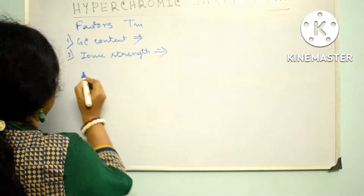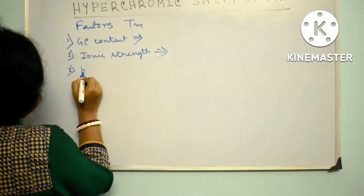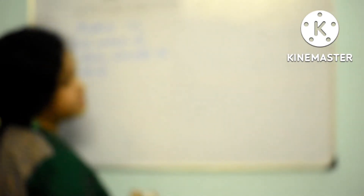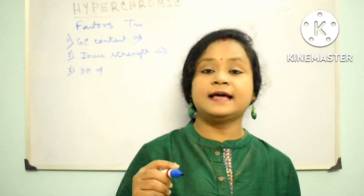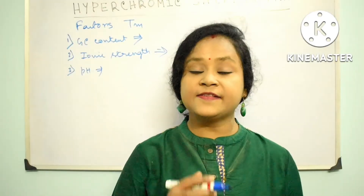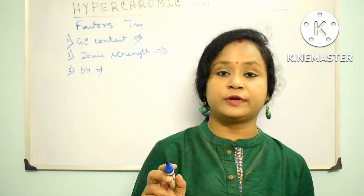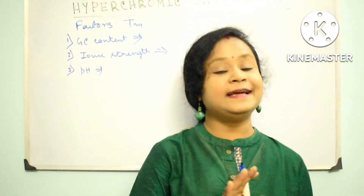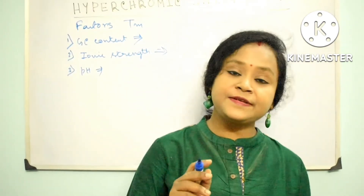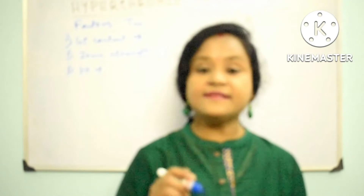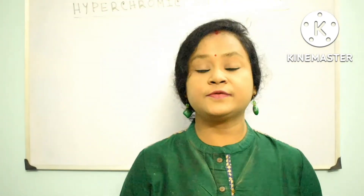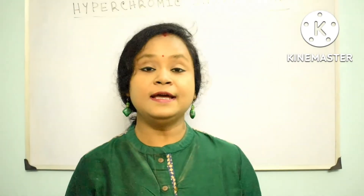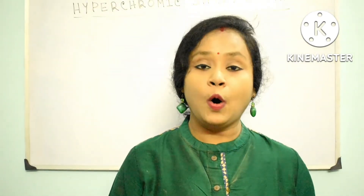Next point: pH. Changes in pH can also affect the Tm. At pH values greater than 10, extensive deprotonation of the bases occurs, destroying their hydrogen bonding potential and denaturing the DNA duplex. Similarly, extensive protonation of the bases below neutral pH also disrupts base pairing.